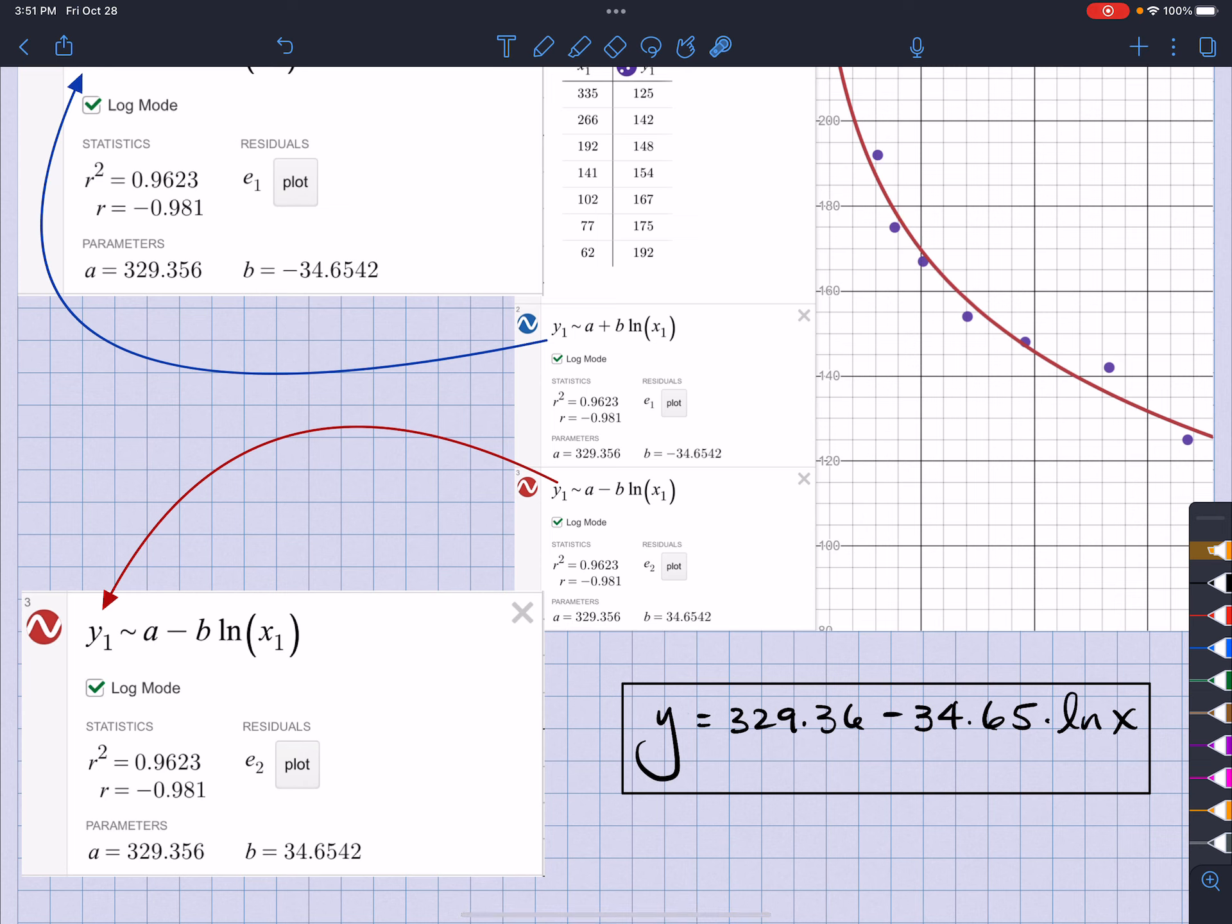Where this one, if I put in subtraction, it's going to tell me my B is positive. So, either way I do this, I'm still going to get the same exact equation. All right.